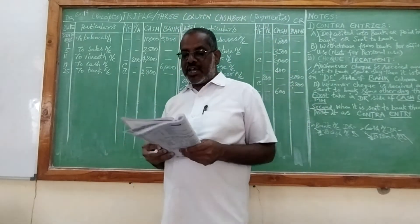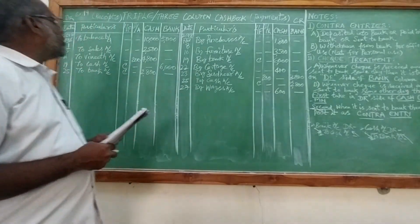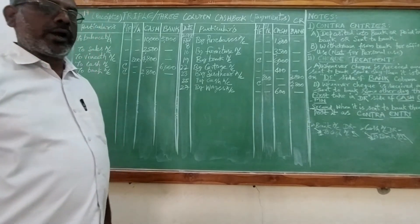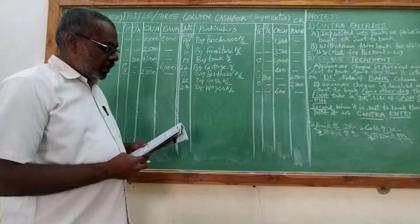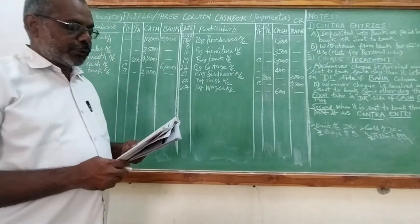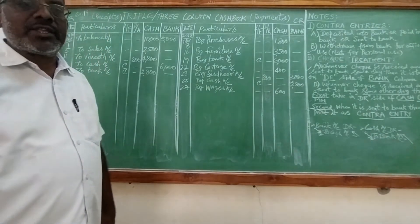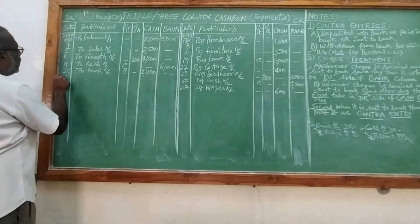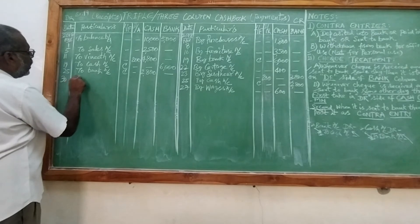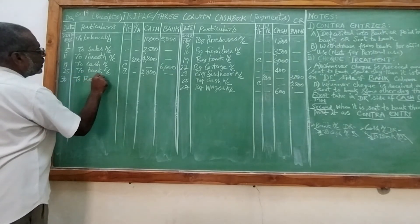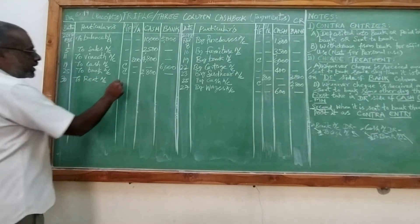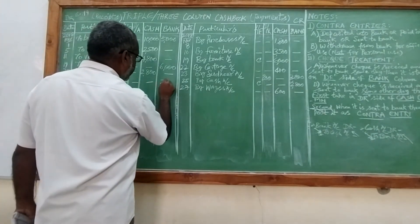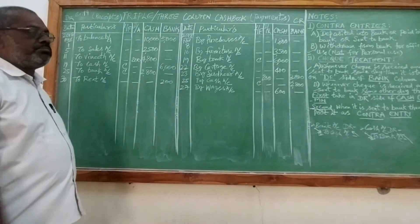The last transaction under problem number 19 of the triple column cashbook from the Telugu Academy textbook is number 30: rent received through Paytm. Since it is a bank transaction, we are receiving rent. All receipts go on the debit side. We enter the rent in the bank column because it is received through Paytm and is directly credited to the bank account.